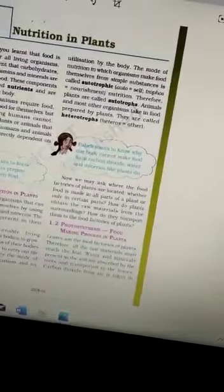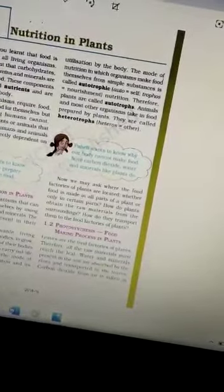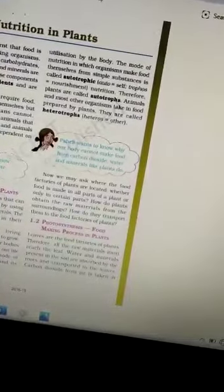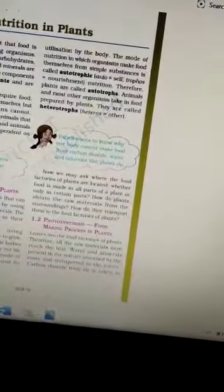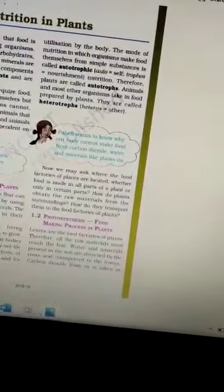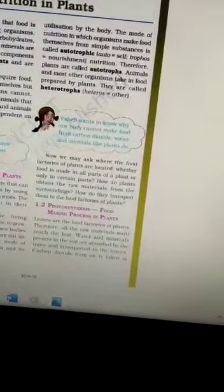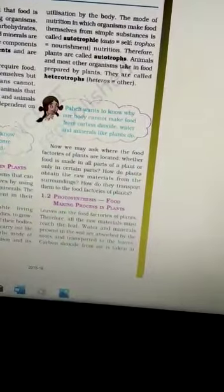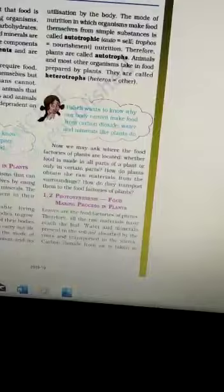Autotrophic mode of nutrition: Plants have chlorophyll in their leaves which helps them to produce their own food. Autotrophic means self nutrition. Animals and most other organisms take in food prepared by plants. They are called heterotrophs. Heterotrophs means other.